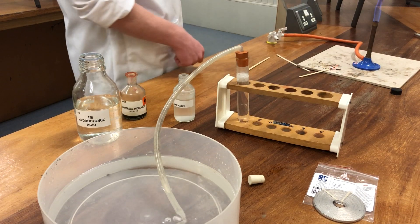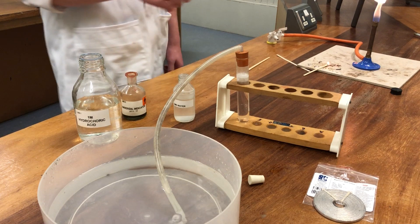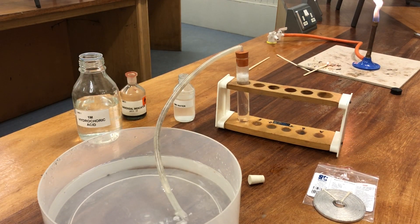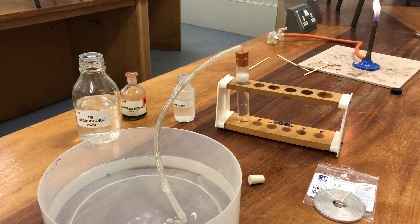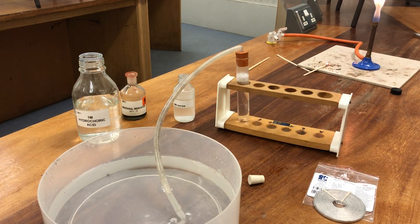To recap the gas tests: the universal indicator remained green, lime water remained clear and colourless, the glowing splint was extinguished, and the burning splint made the hydrogen gas burn with a pop.